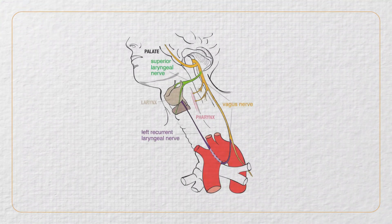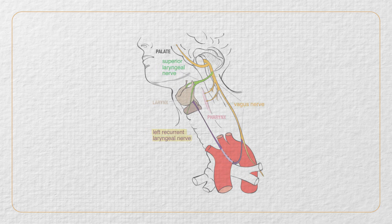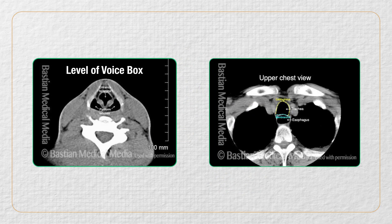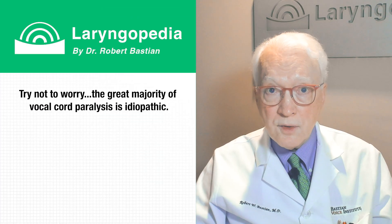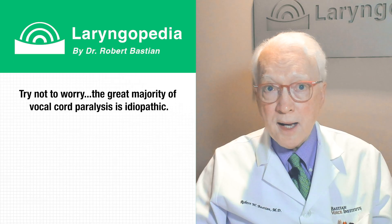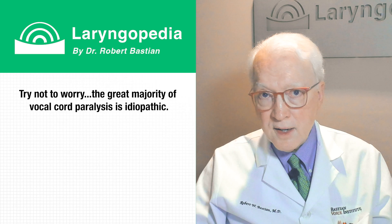The nerve affected is the recurrent laryngeal nerve. It begins from the skull base — it's a cranial nerve — comes down into the chest, and then loops back to the larynx; that's why it's called the recurrent nerve. When we see someone with unexplained vocal cord paralysis, we typically get a CT scan from skull base down into the upper chest to rule out structural causes. A patient will obviously worry, but by far the most commonly we don't find anything.